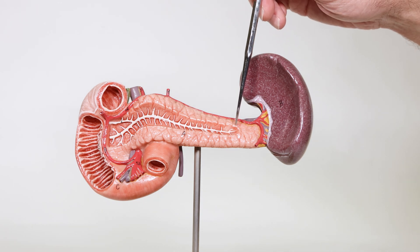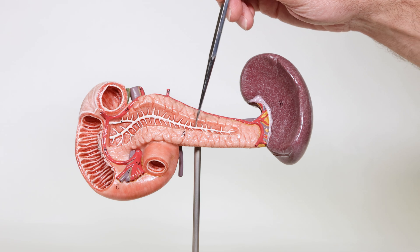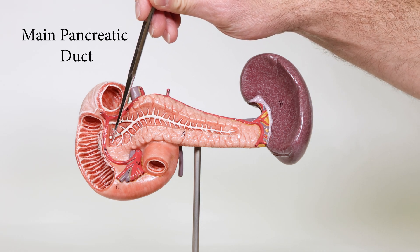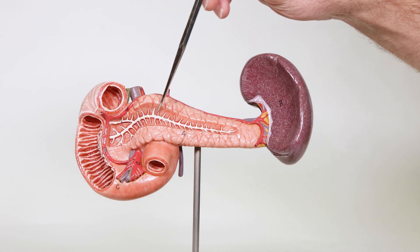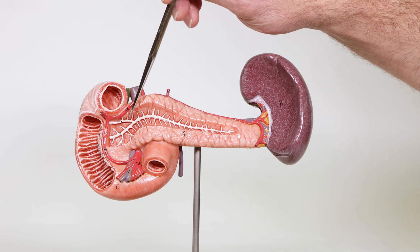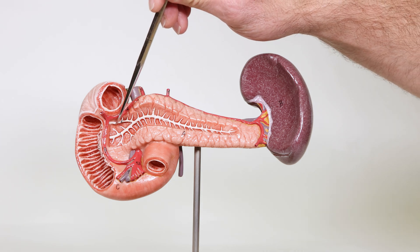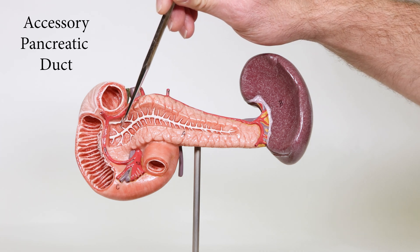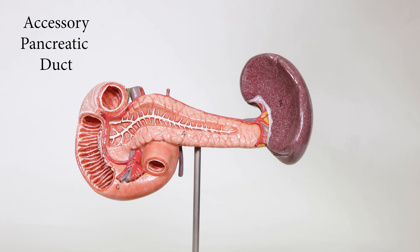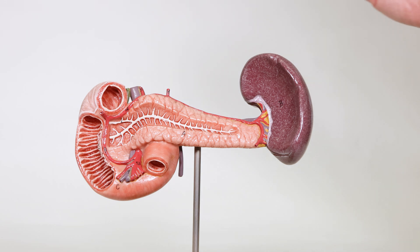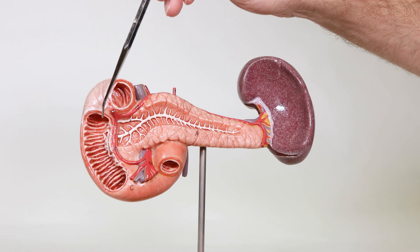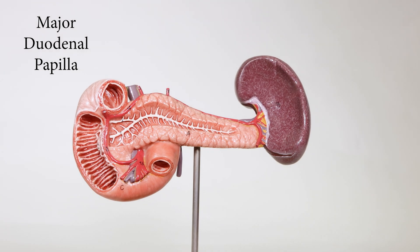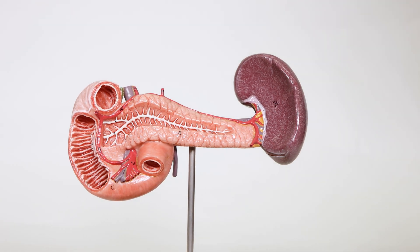Inside the pancreas, this white line right here is the main pancreatic duct. Coming off of that, you'll see this thinner white line right here, which is the accessory pancreatic duct. The main pancreatic duct opens up into the major duodenal papilla right there inside the duodenum.